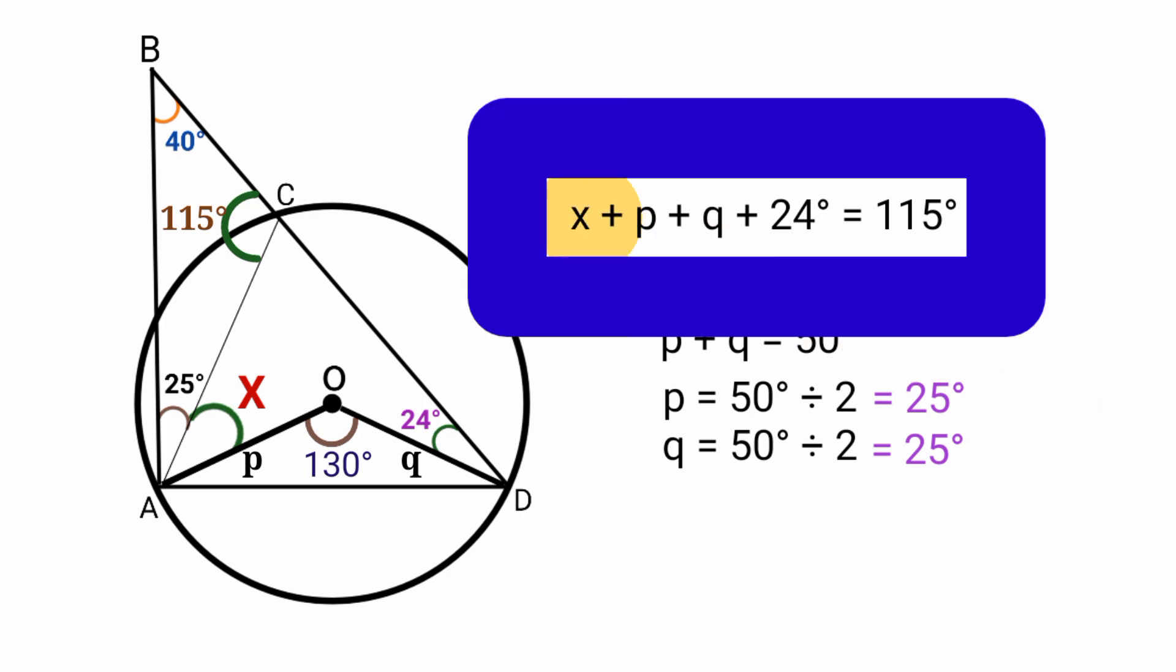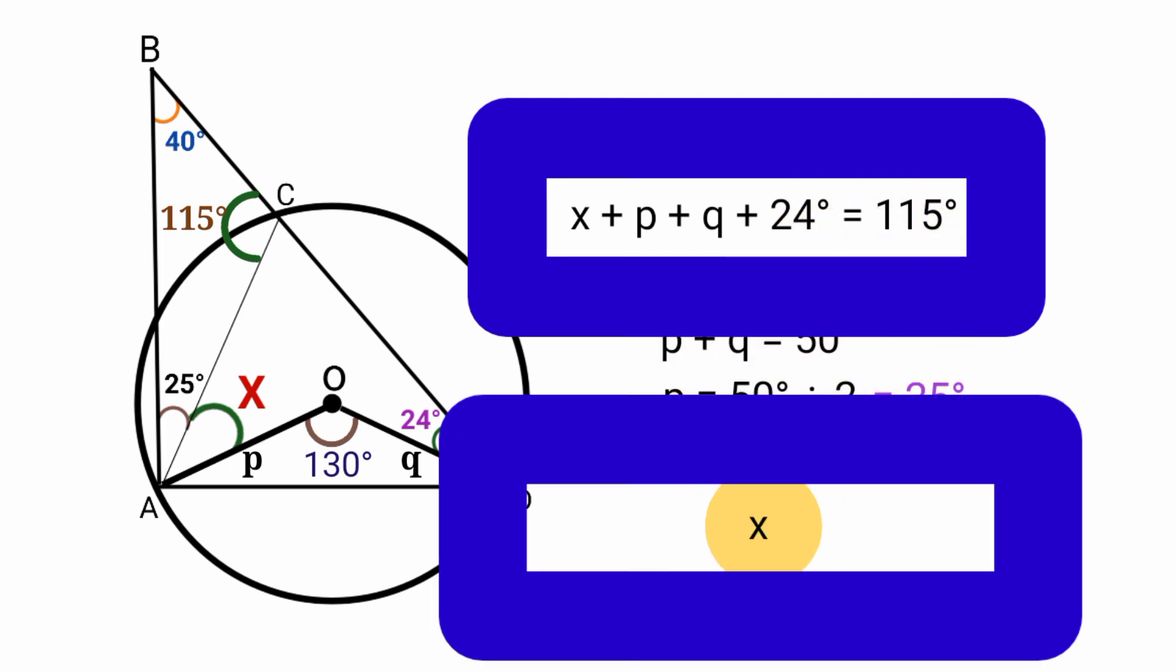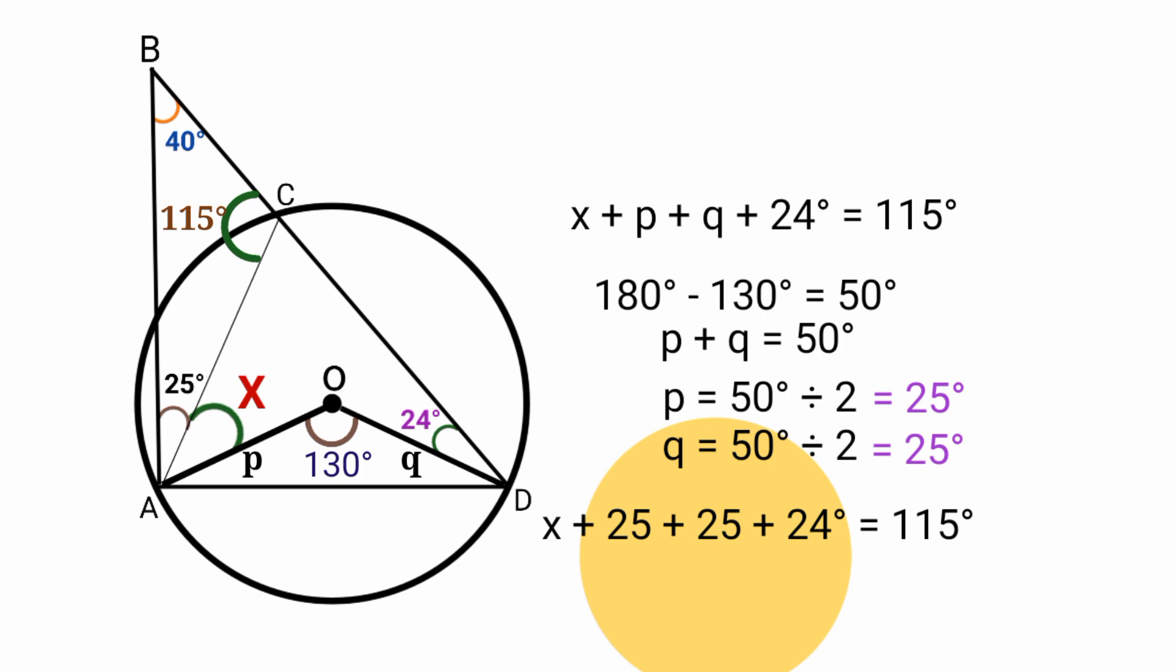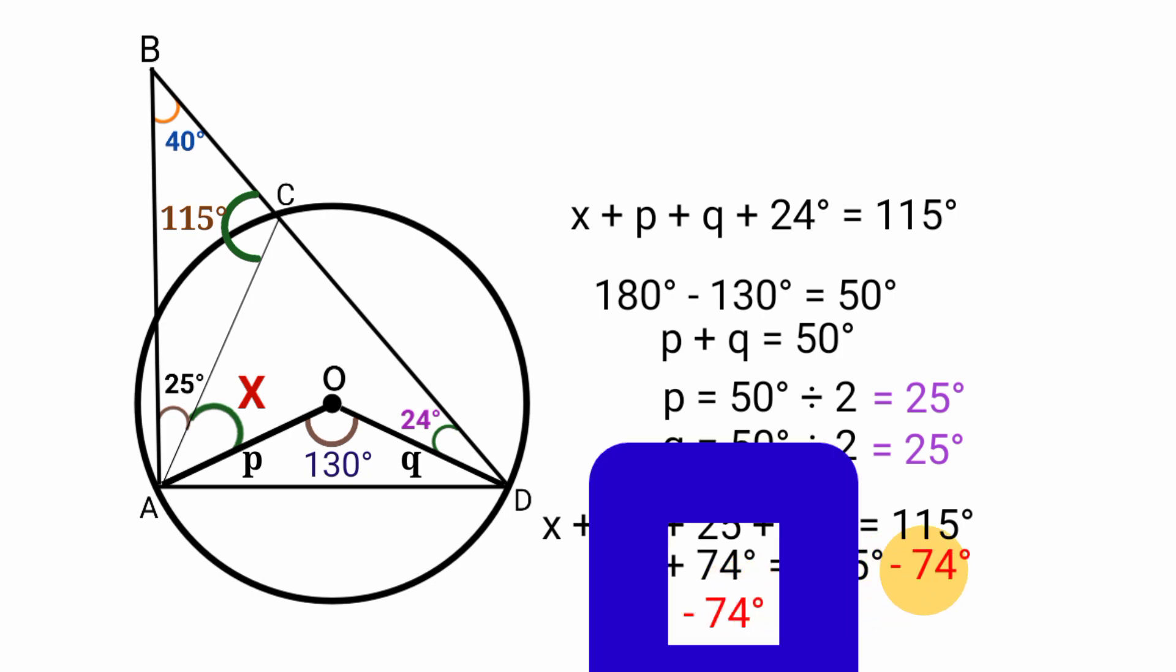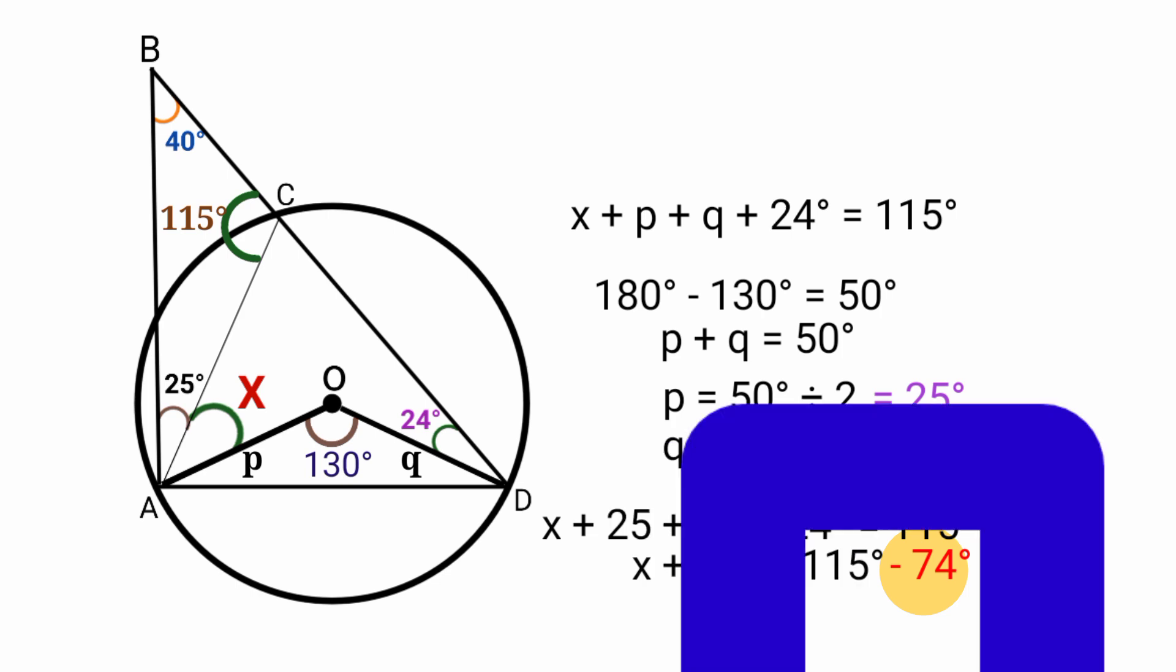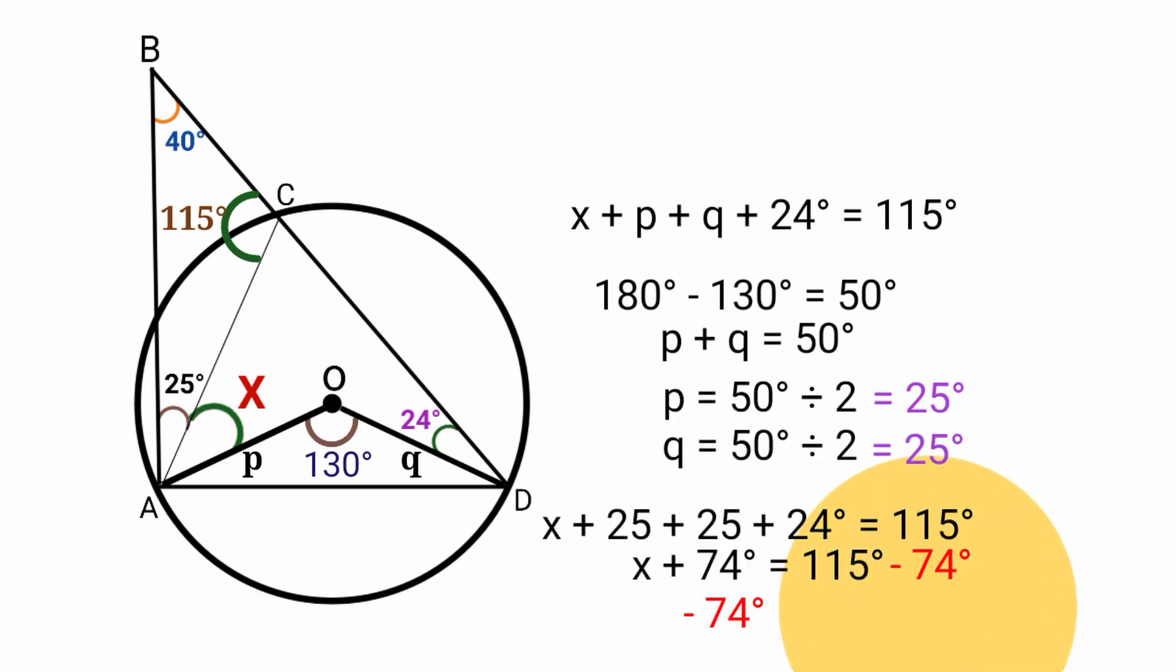Now, coming back to this earlier equation here, X plus P plus Q plus 24 equal to 115. Substituting the respective values of P and Q, we're going to have X plus 25 degree plus 25 degree plus 24 degree equal to 115. 25 plus 25 plus 24 is equal to 74, so we're going to have X plus 74 is equal to 115. To find the value of X here, we subtract both sides by 74 degree. So this will be equal to X plus 74 minus 74 equal to 115 minus 74. 74 minus 74 is 0. 115 minus 74 is 41. So X equal to 41.